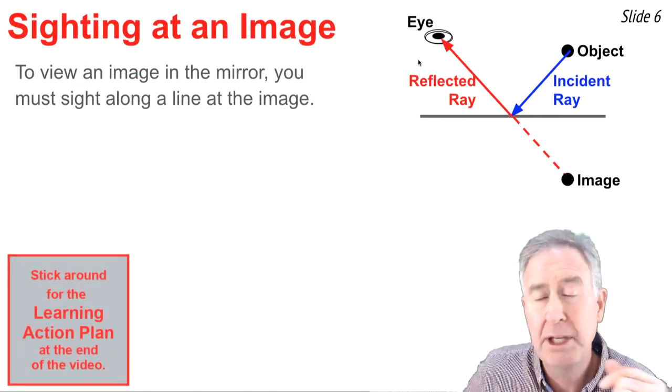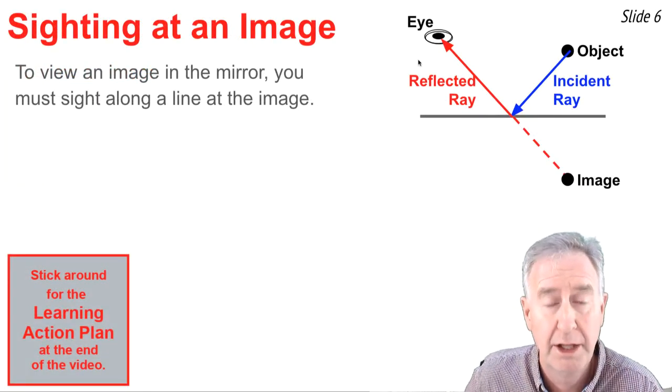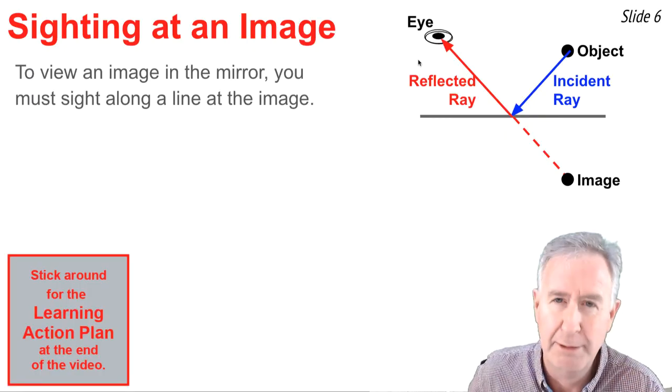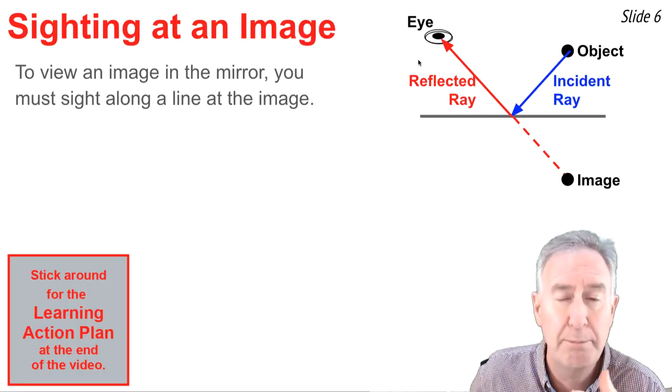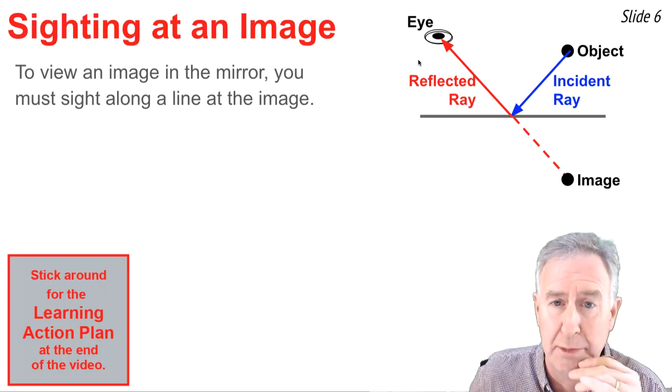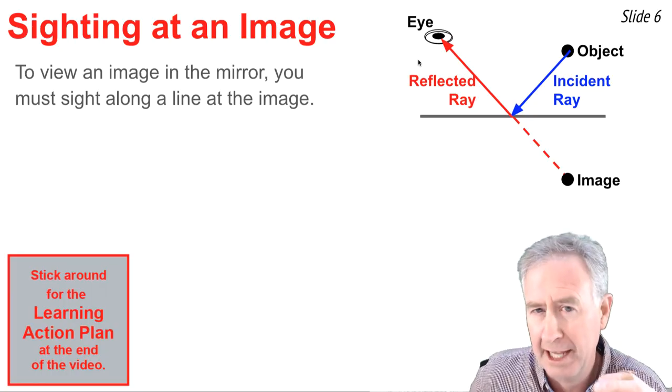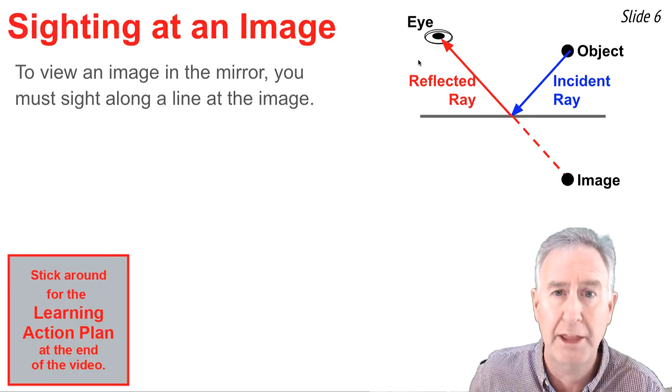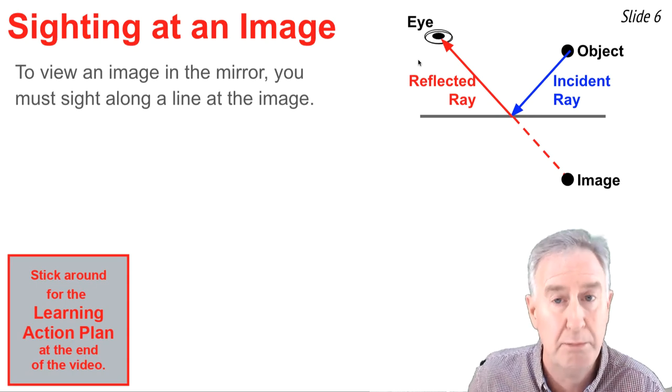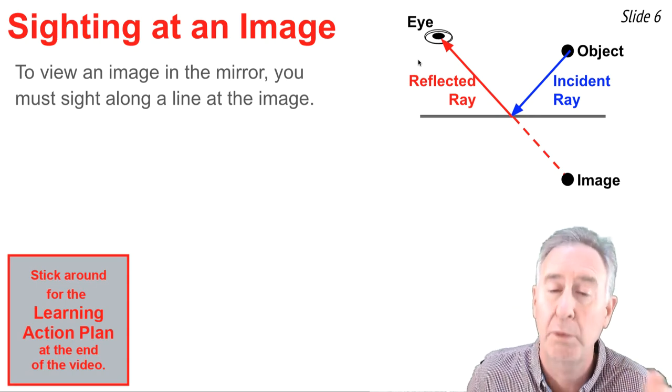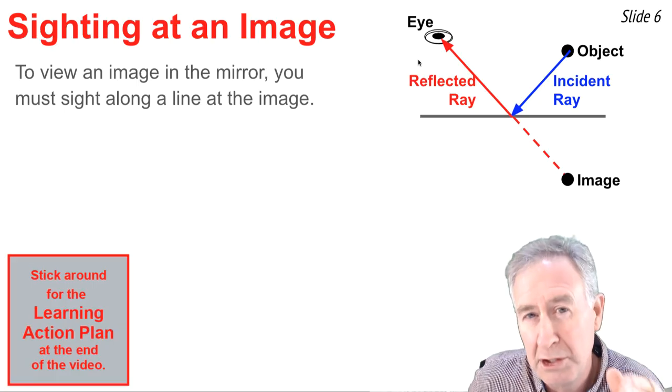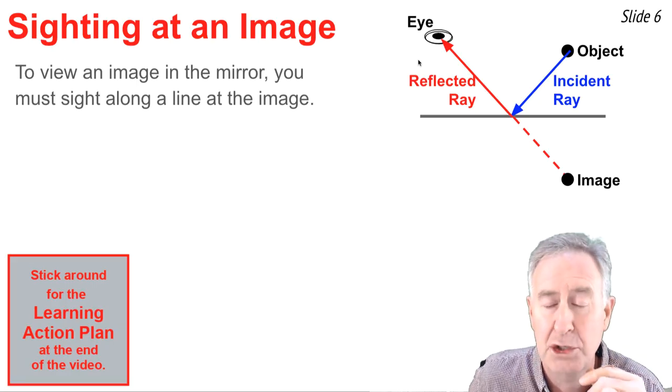The diagram above depicts many of the ideas that I just talked about. You see that there's an object, labeled object, an image, and a horizontal line which represents a mirror. And you'll notice the eye is looking along a line denoted by this red arrow and dashed back behind the mirror at where the image is located. To view an image in the mirror, you must sight along a line at the image.